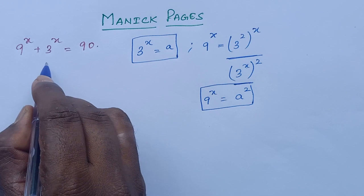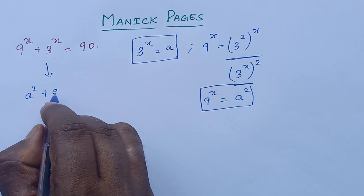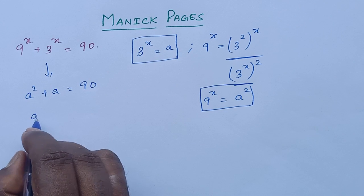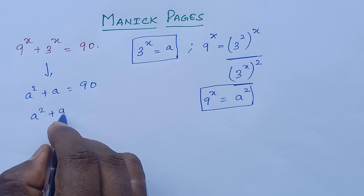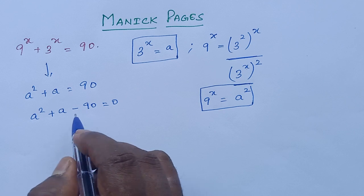Now we can rewrite this as a squared plus a, which equals 90. So a squared plus a minus 90 equals 0.